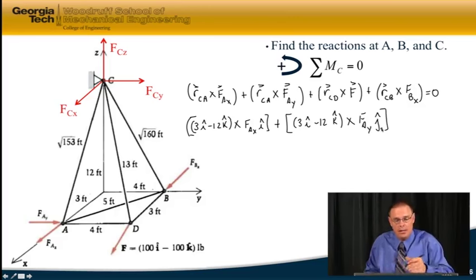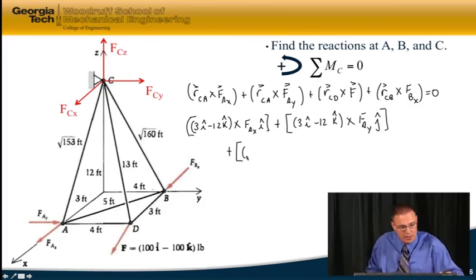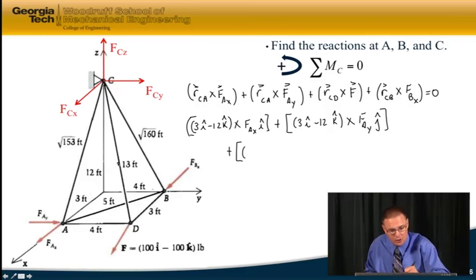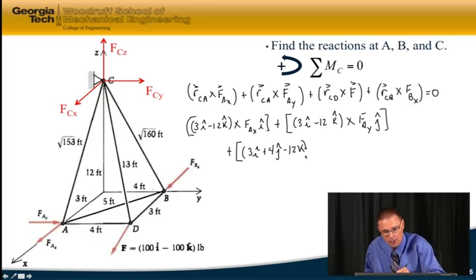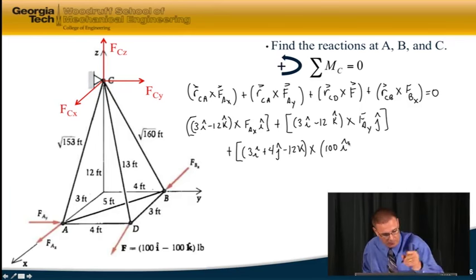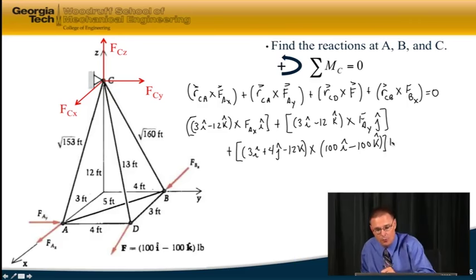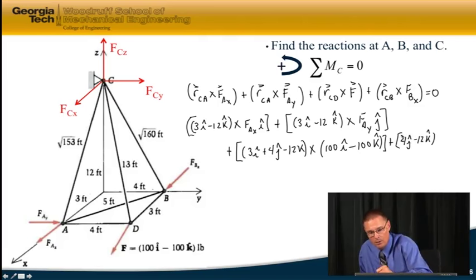And I have R_CD, so plus R_CD to go from C to D, walking from tail to head as we did in my earlier course. We've got three in the X direction, so 3I plus 4J minus 12K crossed with the given force of 100I minus 100K, plus the last force is from C to B, so that's nothing in the X direction, 4 in the J direction, and minus 12 in the K direction, crossed with F_BX, which is all in the I direction, equals zero.